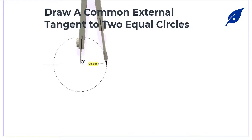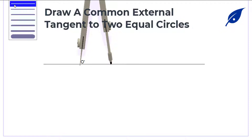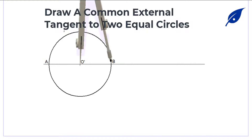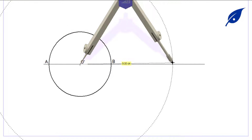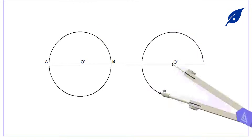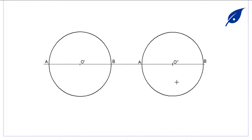Welcome to this video. Today we shall consider the construction of common external tangent on two equal circles. The first thing is to draw a horizontal line, then on that line we draw a circle of a given radius.